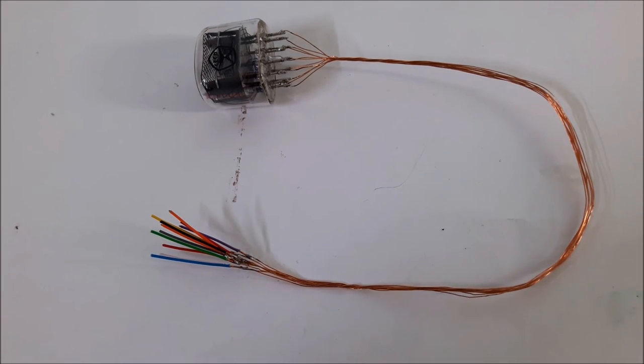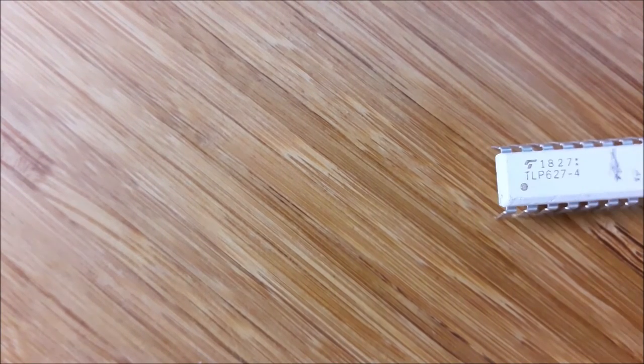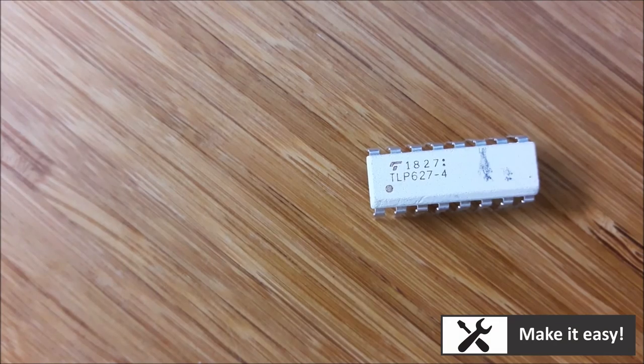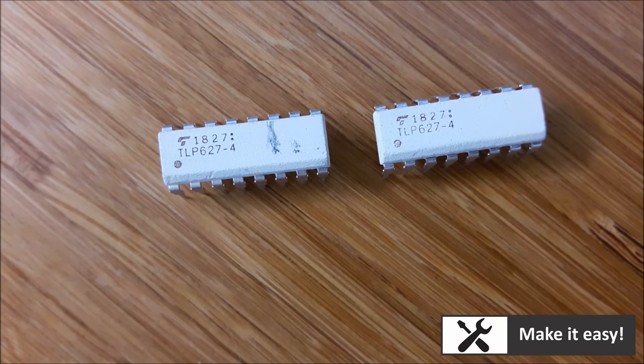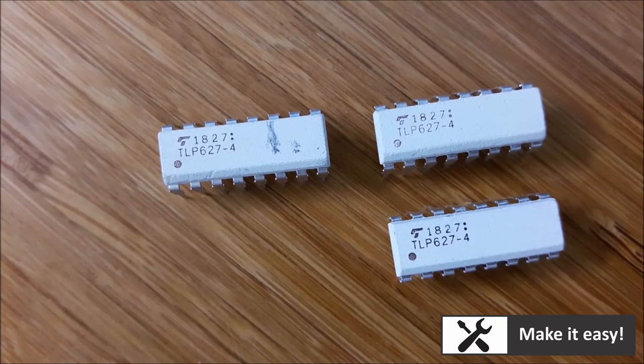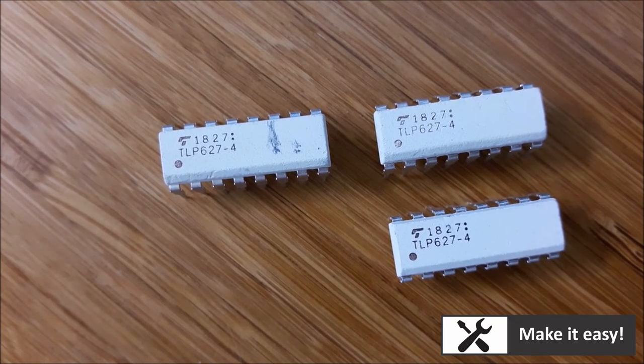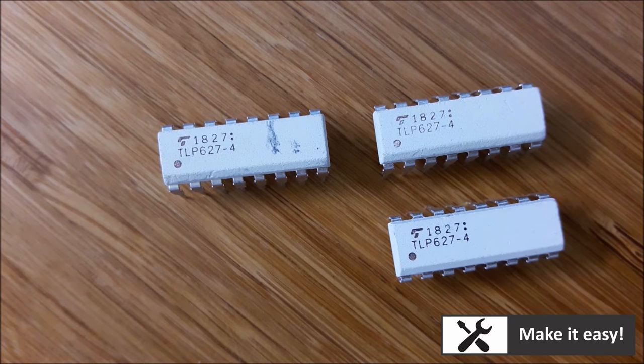I have it one more time. An important part of this project is this opto-isolation chip TLP627. It can isolate up to 300V DC. I will use it to light on Nixitube via Arduino Uno. One chip contains 4 optocoupler inside. This project needs 3 chips which will have 12 optocouplers.